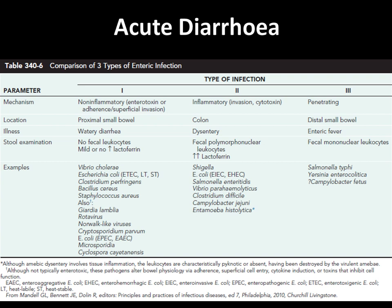Type 2 enteric infection is mediated through cytotoxin with invasion. The colon is involved, and the presentation is dysentery with blood in stool. Examples are Shigella, E. coli, Salmonella, Vibrio parahaemolyticus, and Clostridium difficile. Type 3 enteric infection works through penetration of the distal small bowel, caused by Salmonella Typhi, Yersinia, and Campylobacter.